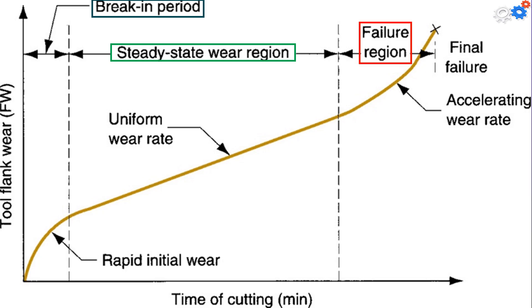Finally, the wear reaches a level at which the wear rate begins to accelerate. This marks the beginning of the failure region, in which cutting temperatures are higher and the general efficiency of the machining process is reduced. If allowed to continue, the tool finally fails by temperature failure.